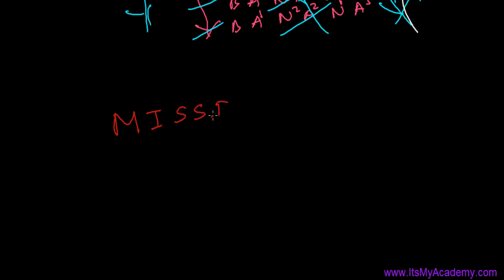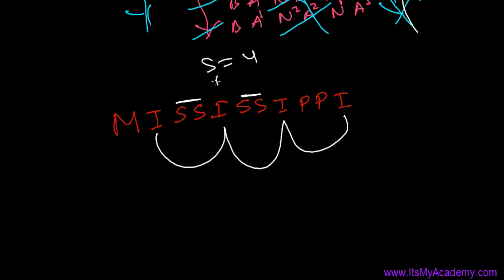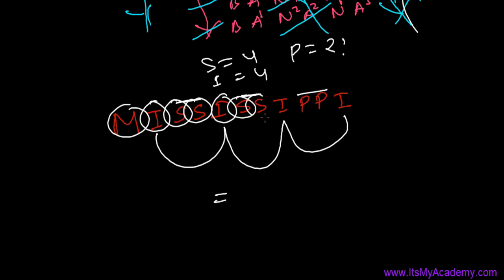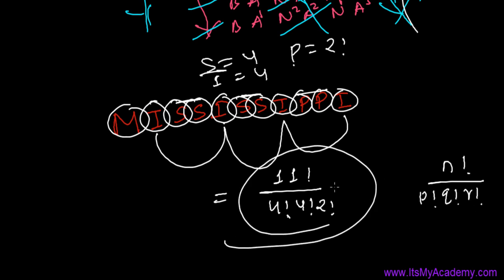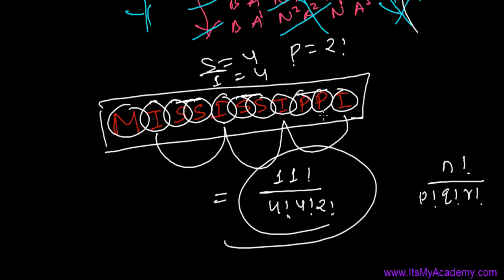Here's another example: MISSISSIPPI — M, I, S, S, I, S, S, I, P, P, I. S is repeated four times, I is repeated four times, and P is repeated two times. Count the total letters: one through eleven — so eleven letters total. The total arrangement is eleven factorial, divided by four factorial (for S), divided by four factorial (for I), divided by two factorial (for P). This gives the total number of distinct arrangements of MISSISSIPPI.